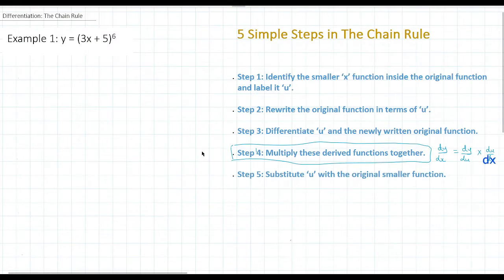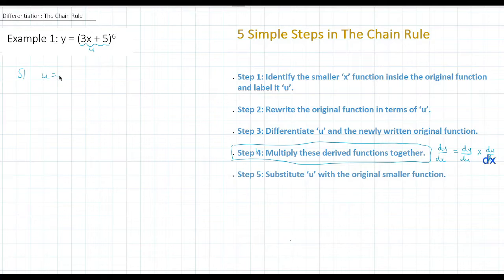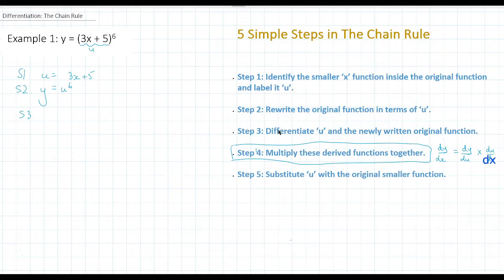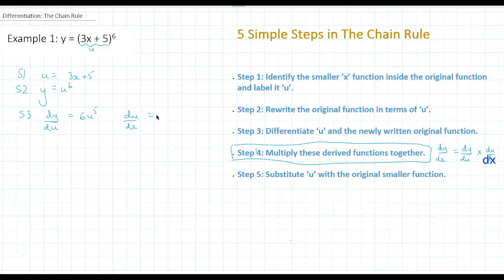Let's look at an example. Example one: y equals (3x + 5) to the power of 6. Step one is identifying your smaller function — in this case u equals 3x + 5. Step two: rewrite the original function in terms of u, so y is now u to the 6. Step three: differentiate both functions. dy/du will be 6u to the 5, and du/dx will be 3.